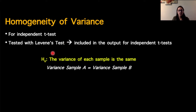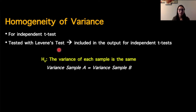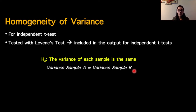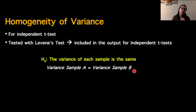We do get a statistic for Levine's test that is then evaluated with a p-value. So anytime that we have a p-value, we know we have a null hypothesis that's been tested. The null for Levine's test is that the variance of each sample is the same — in other words, the variance of sample A is equal to the variance of sample B. The null hypothesis for homogeneity of variance is the null hypothesis for the assumption, and based on the evaluation of p for this assumption, that will tell us if we've met the assumption or if we've violated the assumption.